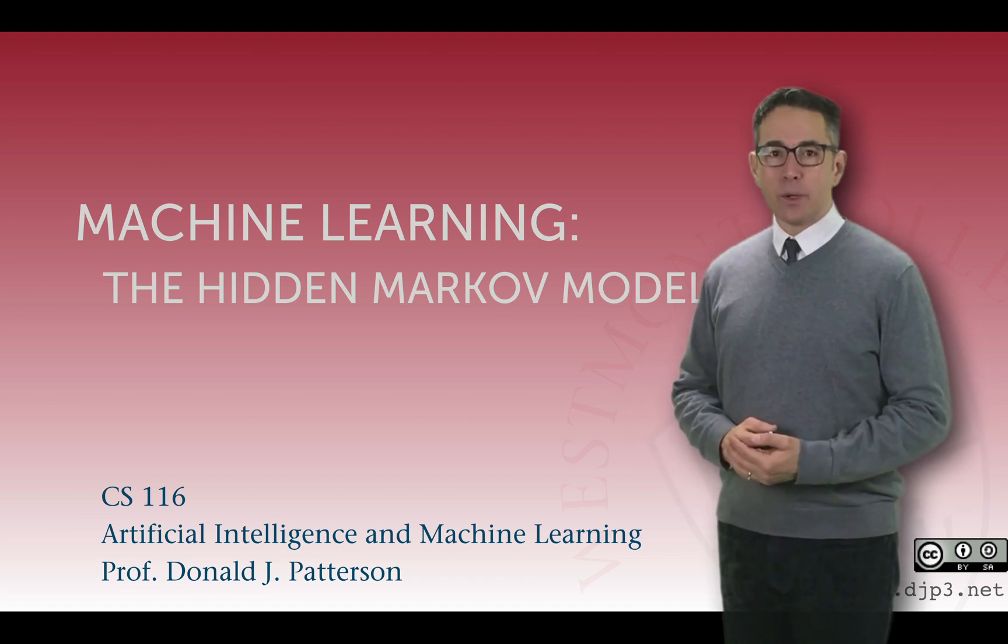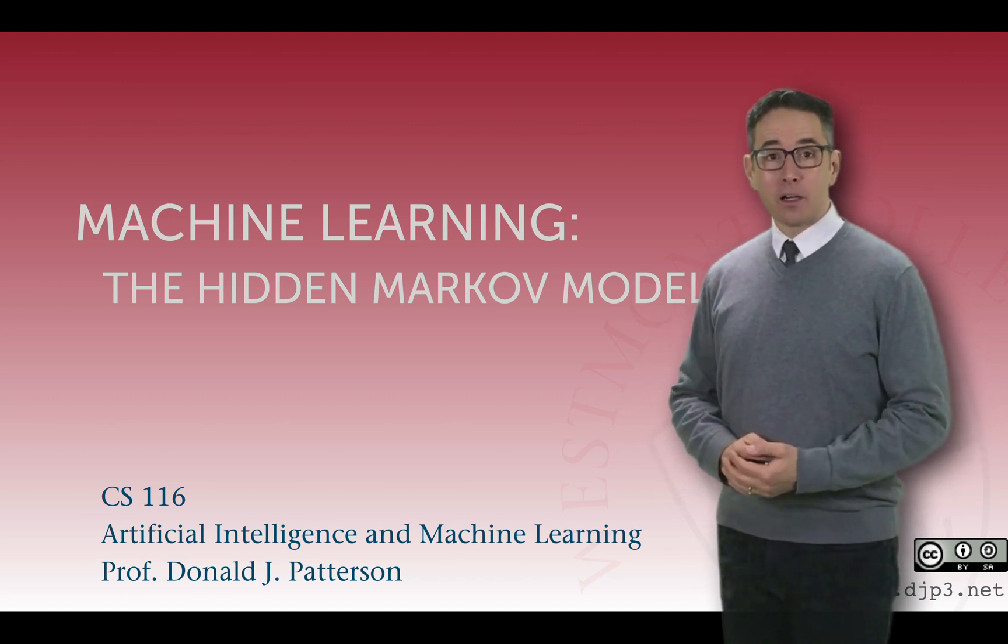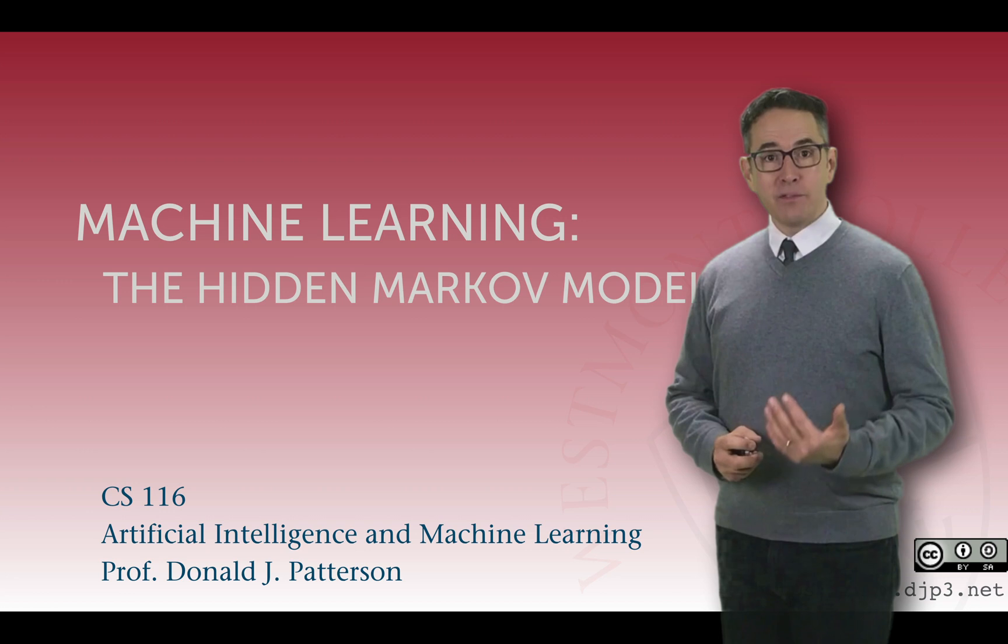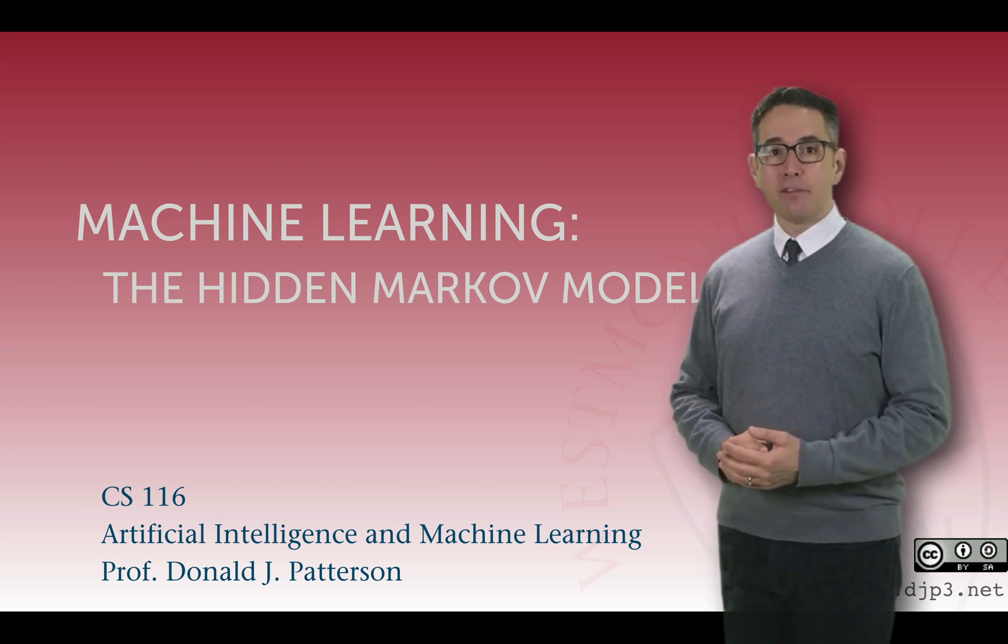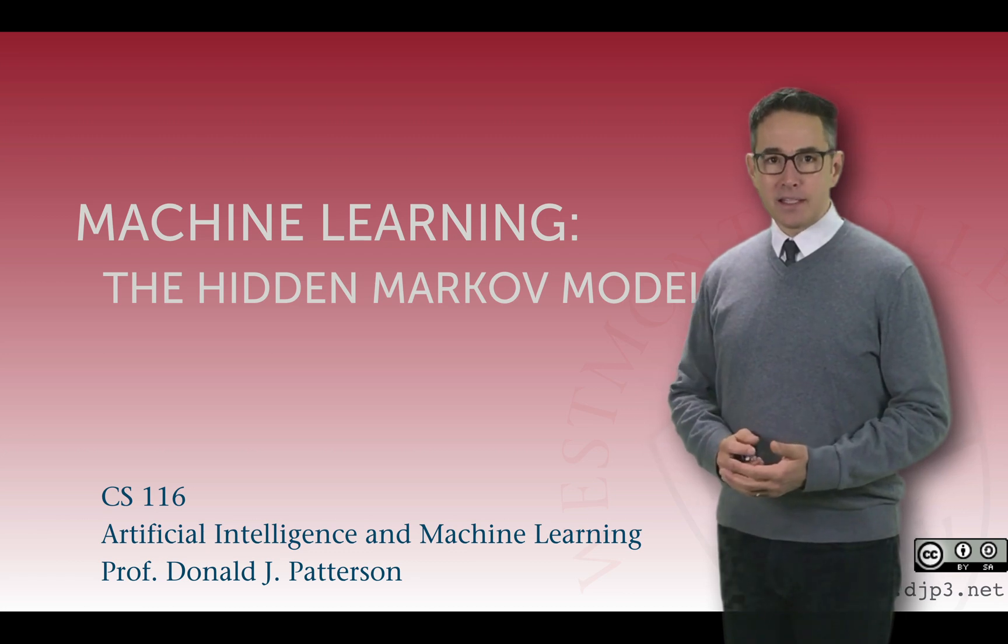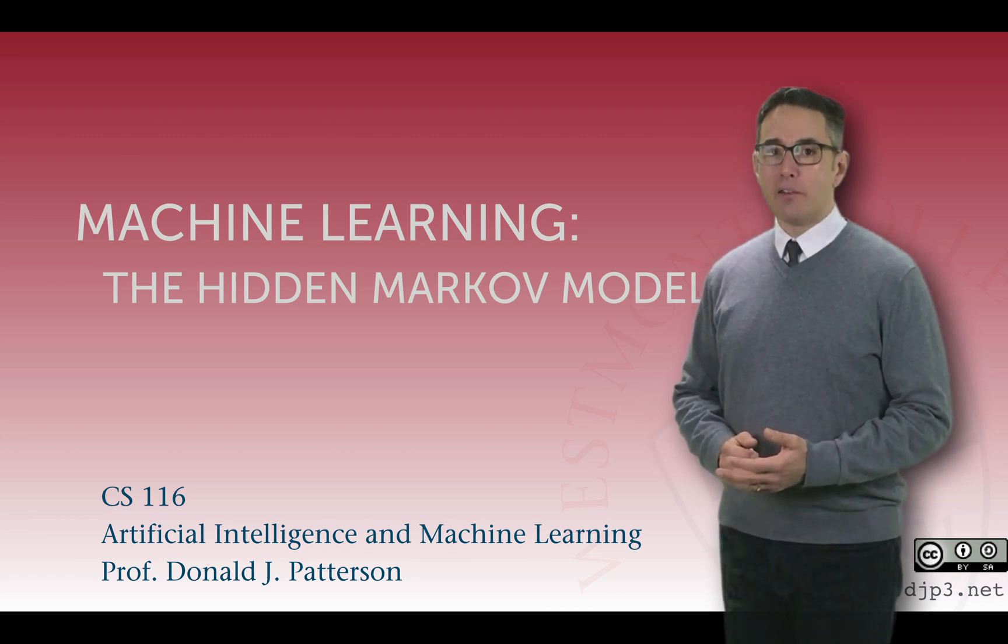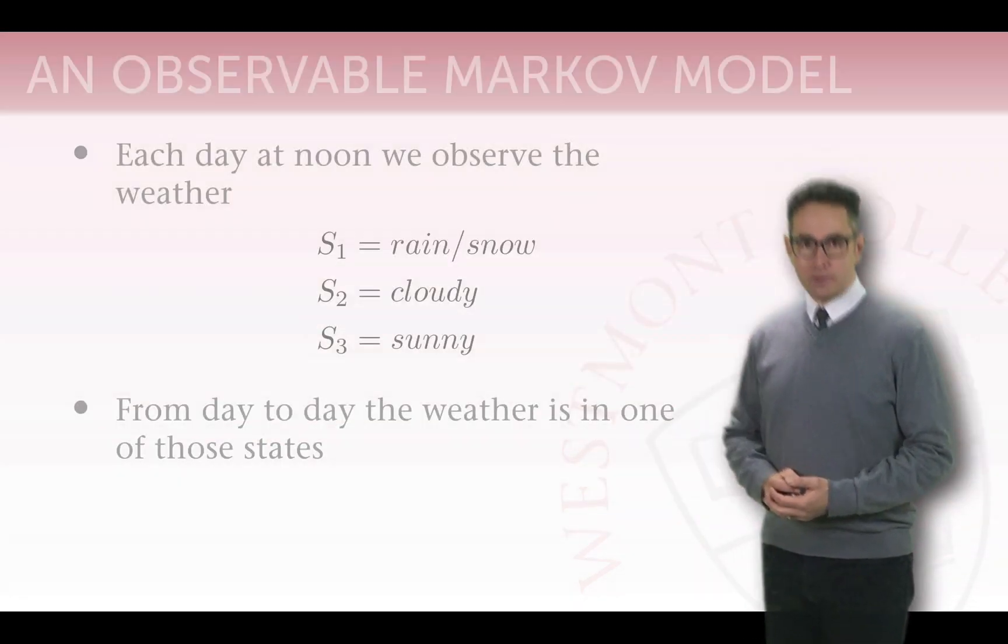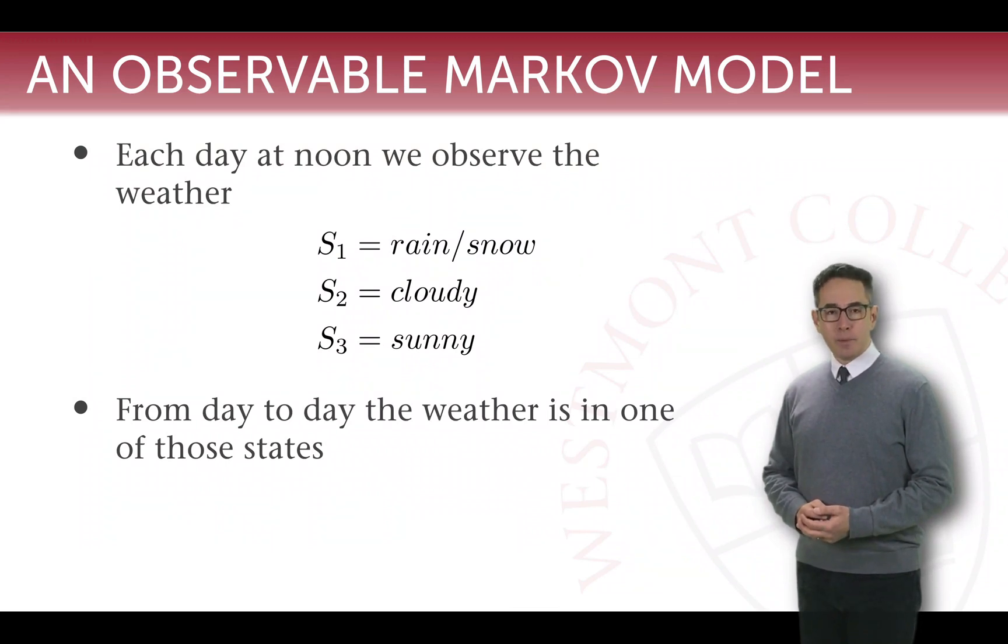This is the third lecture in a sequence talking about the hidden Markov model. Previously we've talked about what a discrete Markov model is and what the Markov property is. We're going to look in this lecture at a particular example of an observable Markov model, which is the foundation for building our hidden Markov model. We're trying to get familiar with what this means and the mathematical notation for it. I want to walk through a very concrete example.